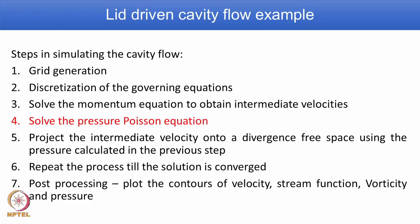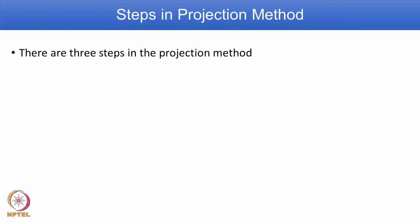We correct the velocities and repeat the steps until the solution is converged. The last step, once we get all the variables, we look into the flow through different post-processing. We are following a procedure called the projection method to do the pressure-velocity coupling. In the projection method, there are three steps involved.